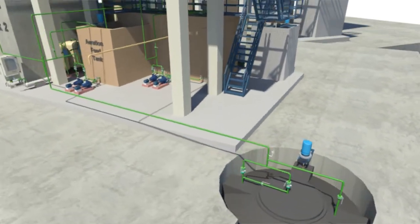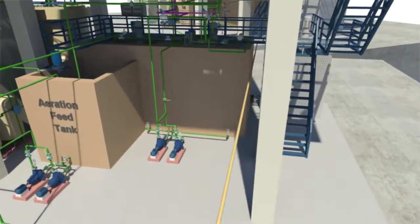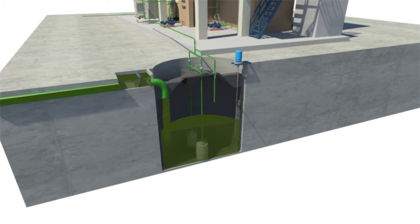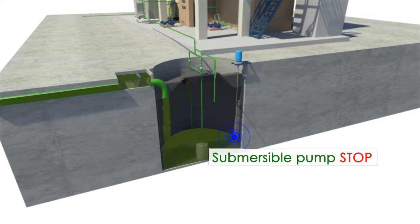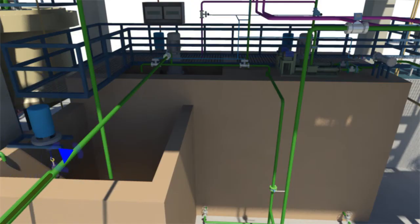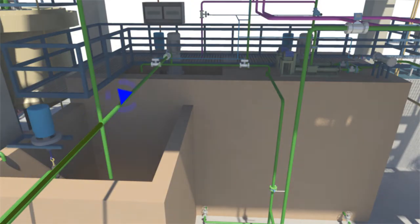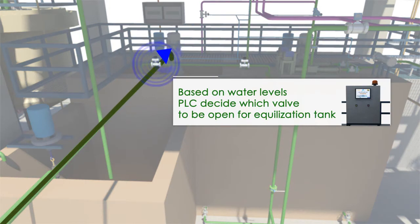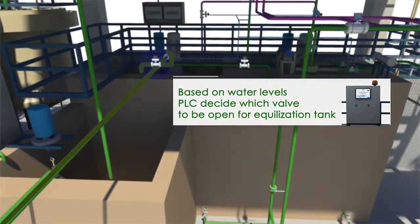On detection of an adequate quantity of wastewater, the level sensor activates the controller, which automatically starts the submersible pump. Based on input from the level sensor of the equalization tank, the PLC decides which valve is to be opened and discharges effluent into it.